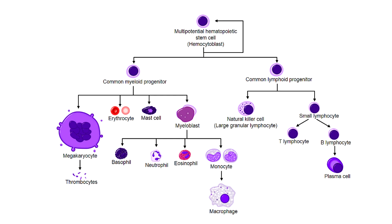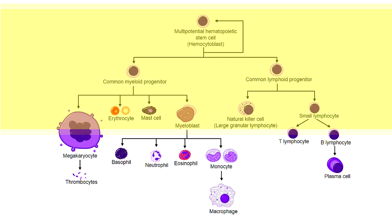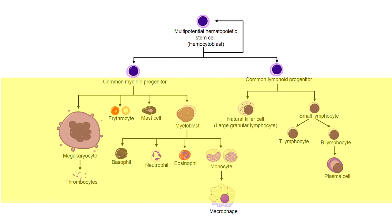Looking back at our diagram of haematopoiesis — the cells at the top are the pluripotent stem cells. The machinery of these cells is geared up for fast replication, and besides that they aren't very useful for anything. As we go further down, the cells become more mature, with the machinery becoming less about rapid proliferation and more about doing the job the cell is supposed to do — functioning as a red blood cell or as a neutrophil.